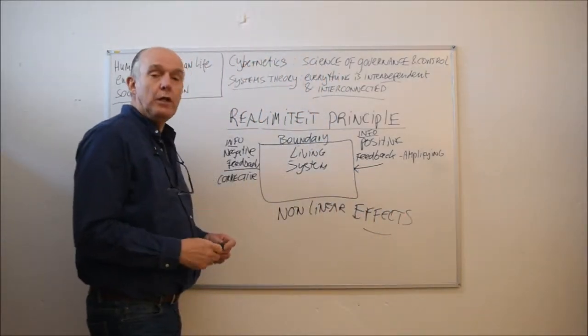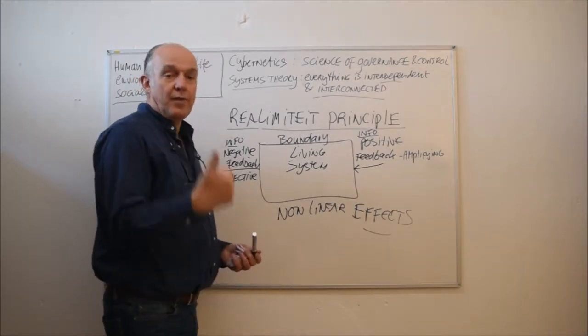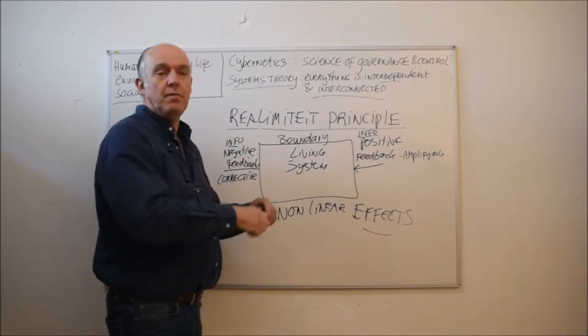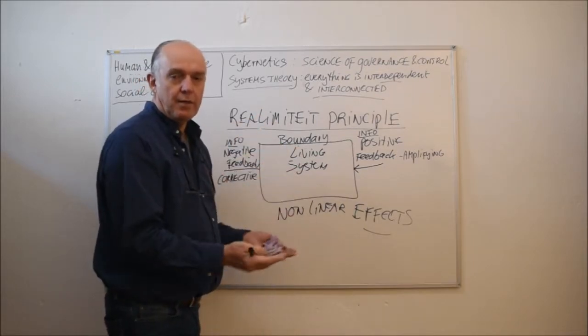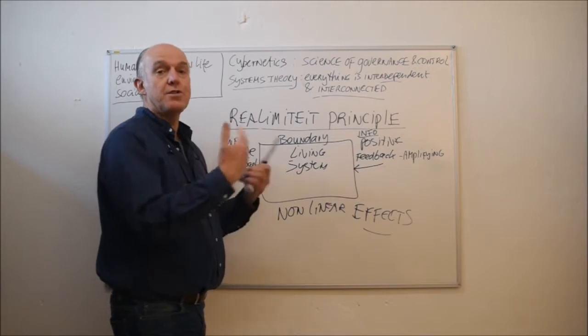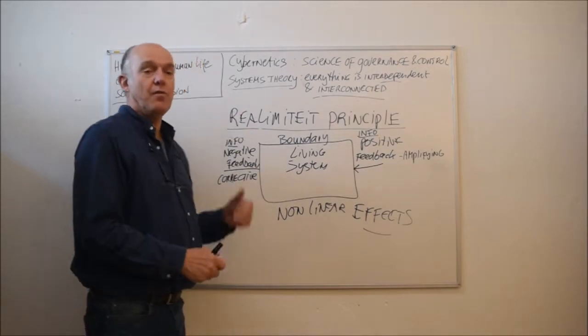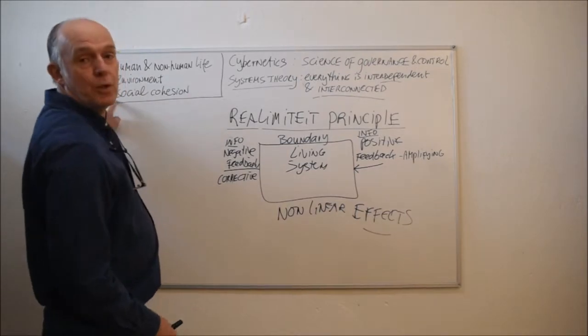We see those non-linear effects everywhere. The financial system is, as we call it, negative interdependent, which means it serves some but at the cost of others, the cost of environment, social cohesion, life.